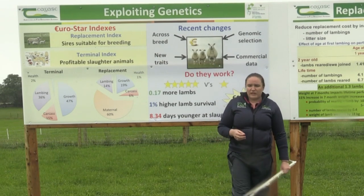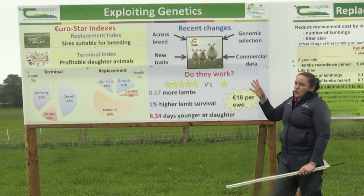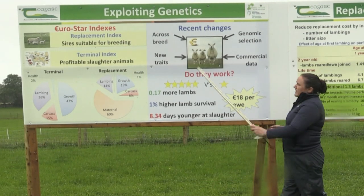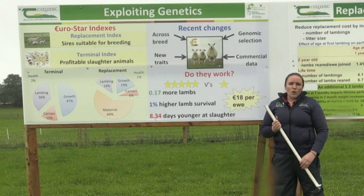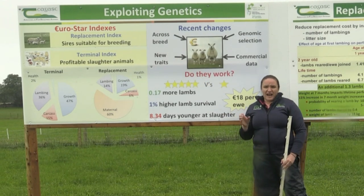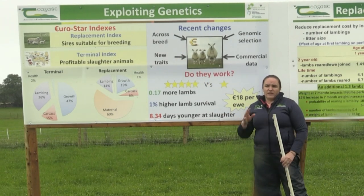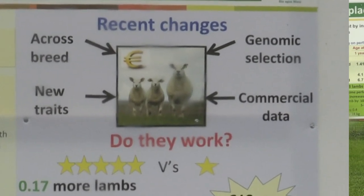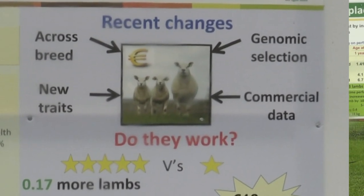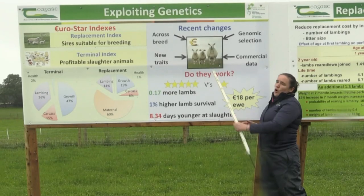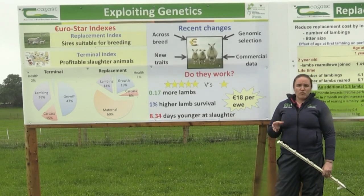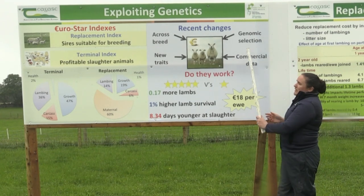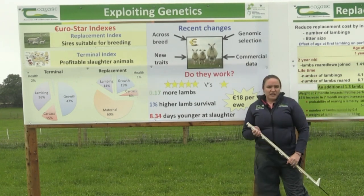What's new in the indexes since we last spoke at the open day? First, we now go across breed — we can compare the Eurostar value of a Texel to a Suffolk to a Charollais. If you're unsure what breed to pick, the most important figure to look at is the overall Eurostar index and pick a ram with as high a value as possible within that.